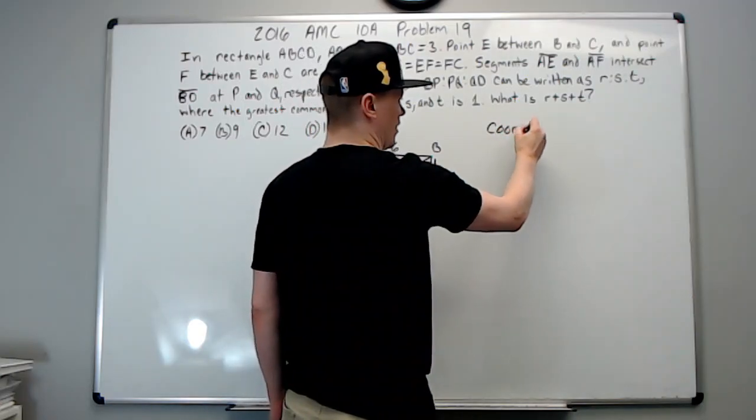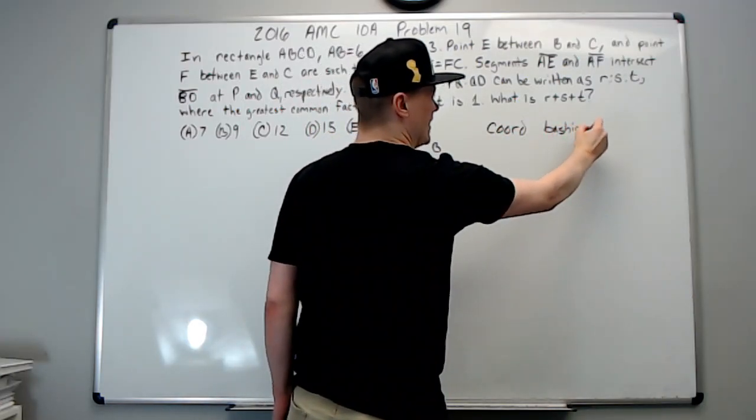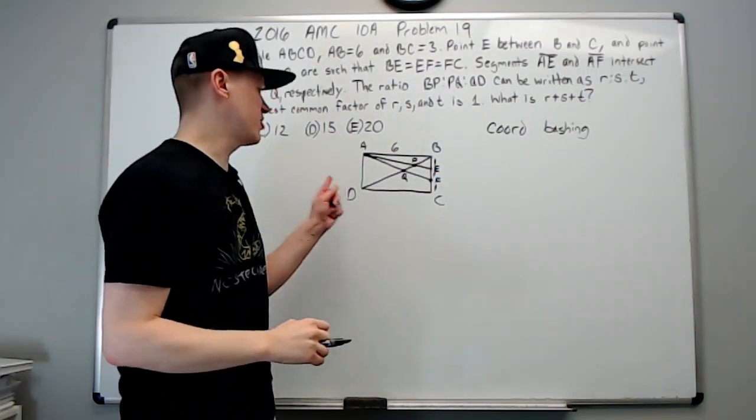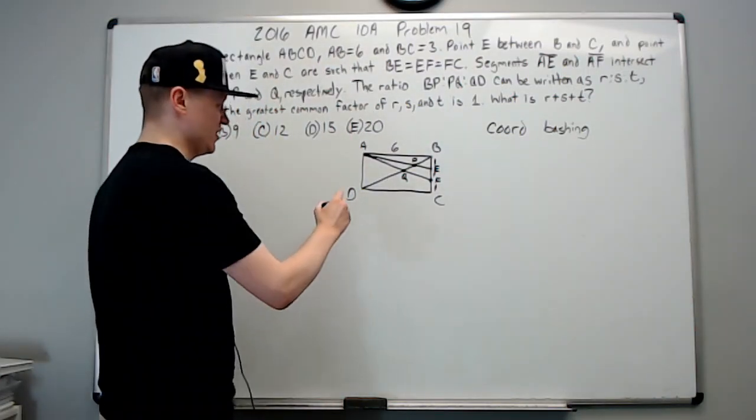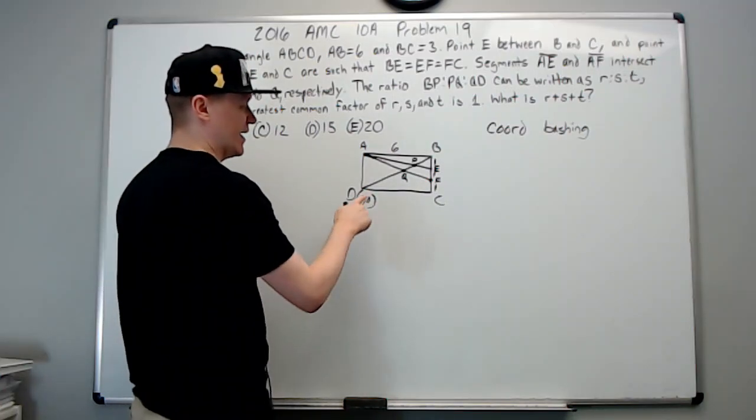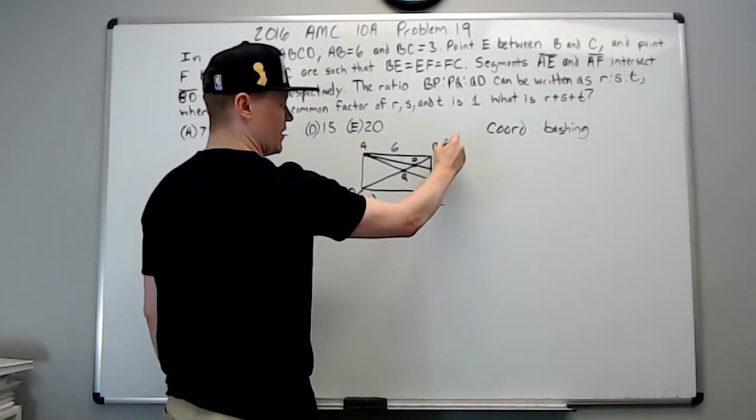Coordinate bashing. What does it mean if you're not familiar with the term? It means turn this into a coordinate plane. So this would become the origin zero zero.